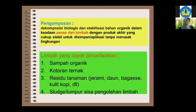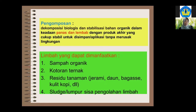Limbah yang dapat dimanfaatkan untuk kompos: pertama, sampah organik — ini termasuk jenis limbah yang sangat mudah dikomposkan dan tidak memerlukan waktu yang lama. Kedua, kotoran ternak — kotoran ternak kaya nitrogen, biasanya rasio C/N-nya rendah sekitar 15-20. Oleh karena itu kotoran ternak berfungsi sebagai sumber nitrogen.